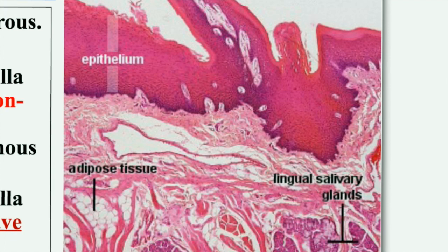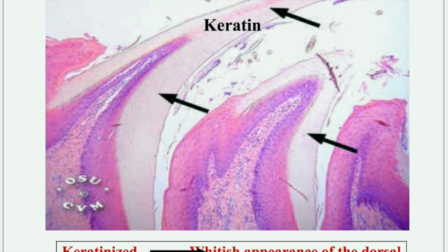The connective tissue also contains nerves and lymphatics, in addition to the lingual glands, which are accessory or minor salivary glands. They are mixed serous-mucous glands that open by three or four ducts on the ventral side of the tip of the tongue. Fat cells of adipose tissue are also present in the connective tissue under the papillae. The filiform papillae are the only type covered with keratin, especially at the top, giving rise to the whitish appearance of the dorsum of the tongue, and they have no taste buds.